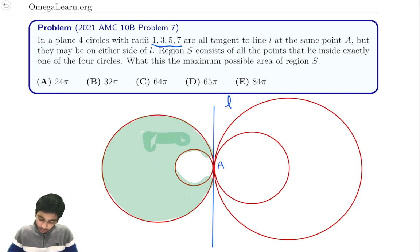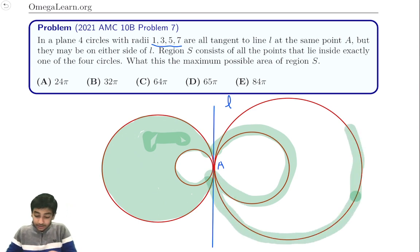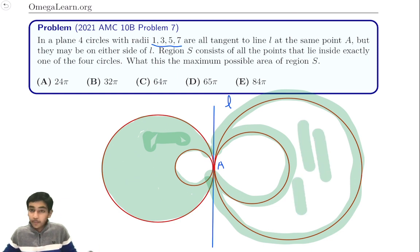Something similar. I'm not going to draw the whole thing out, but something like this. So basically in this configuration, that's what the area is looking for. The one that's going to be inside only one of the circles. It's not going to be inside more than one circle.